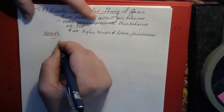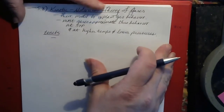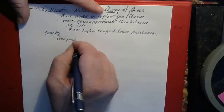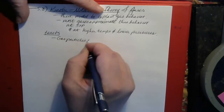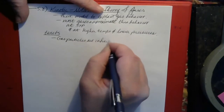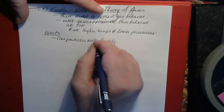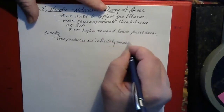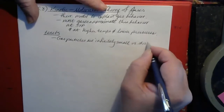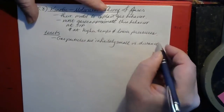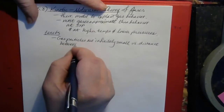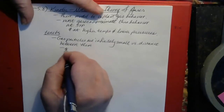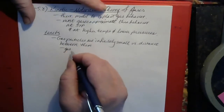So the tenets of the kinetic molecular theory — the things that describe what gases are like. First of all, it posits that gas particles are infinitely small versus the distance between them, or in other words, gas particles have no volume according to the kinetic molecular theory.